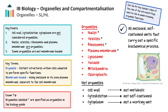Parts of the cell not considered organelles are the cell wall, the cytoskeleton and the cytoplasm. These are specified in the IB biology guide. They are not classified as organelles because each does not fulfil the definition completely. The cell wall provides structural support rather than performing a metabolic function. The cytoskeleton is a network of fibres that supports and moves the cell but is not a separate compartment. The cytoplasm is the general aqueous medium in which organelles are suspended rather than a specialised structure or working unit.